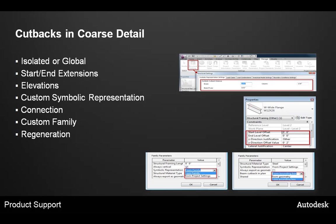Is your beam framing into a column? If so, check the cutback settings associated with the column family. Edit the column family and enter the Category and Parameters dialog. There is a 'beam cutback in plan' parameter that can be set to 'from bounding box' or 'from geometry.' This determines whether the beam cutback is calculated from the column bounding box or the physical geometry of the column — which matters if the column has nested components such as a foundation or plate within the family.